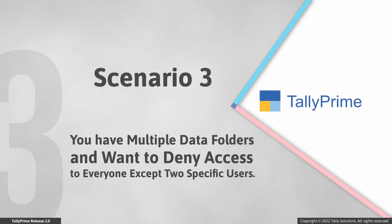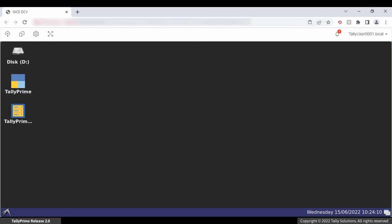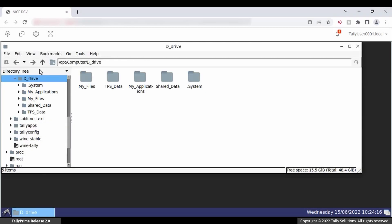Let us now look at yet another scenario. In case you are maintaining multiple subfolders — for example, Bangalore, Chennai, and Delhi — under a data folder, and you want to restrict access to the Bangalore folder for all users except two specific users. Among the two users of Bangalore, one has full access and one is Allowed in Tally Prime.